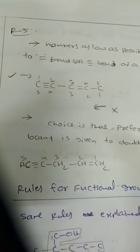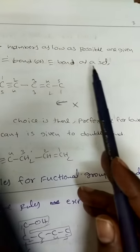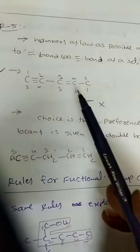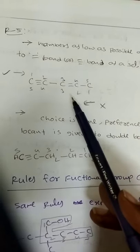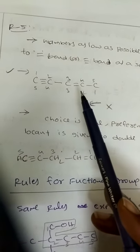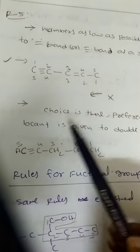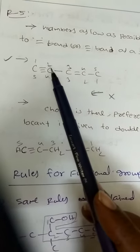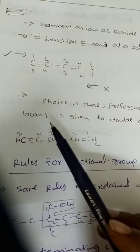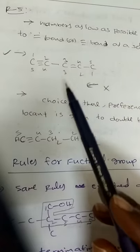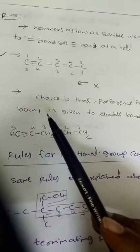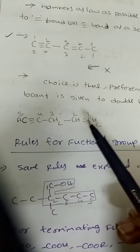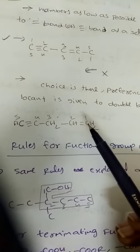Rule 5: numbers as low as possible are given to double and triple bonds as a set. If both a triple bond and a double bond are present, consider the combined set of locants and choose the numbering that gives the lowest set overall. For example, if one direction gives locants {2,4} and another gives {1,3}, then {1,3} is correct. If there is still a choice, preference for the lower locant is given to the double bond.